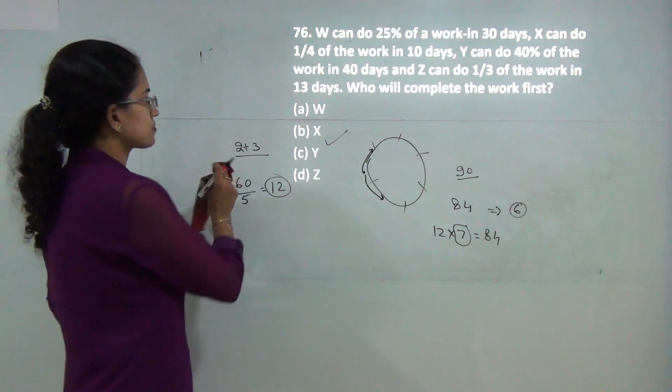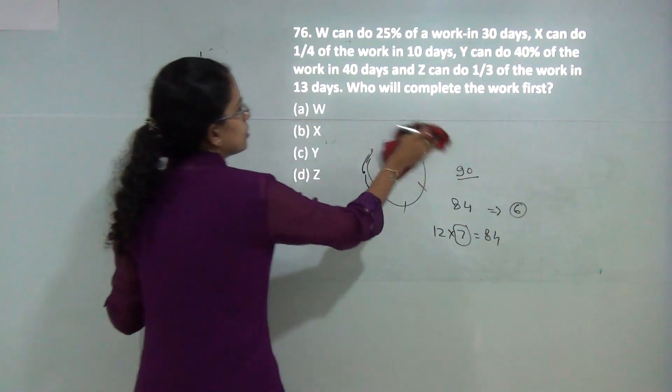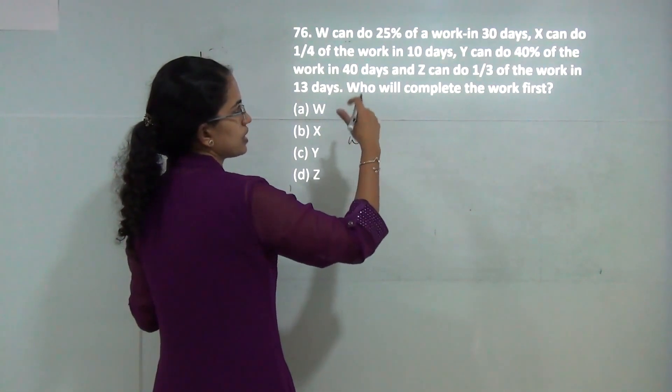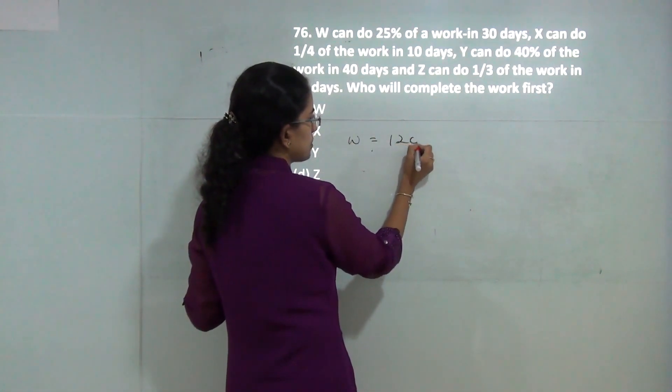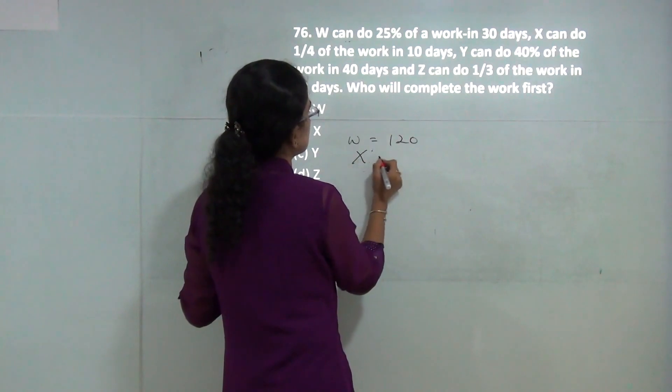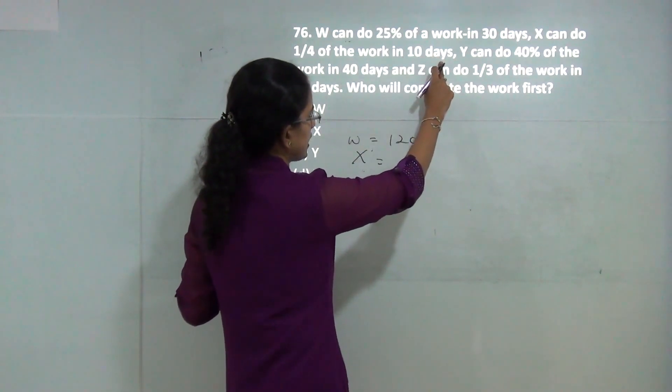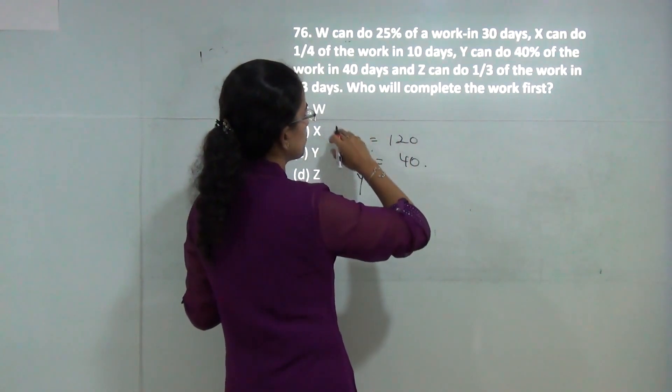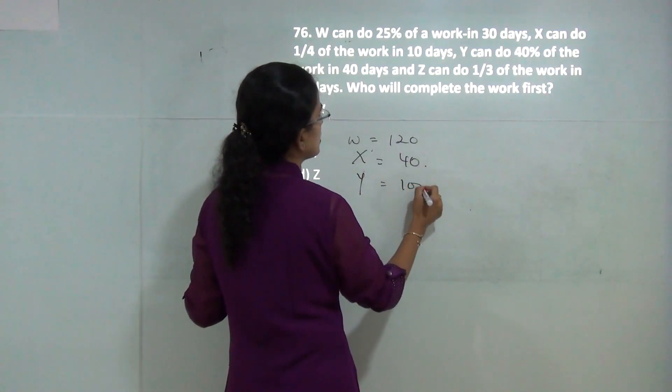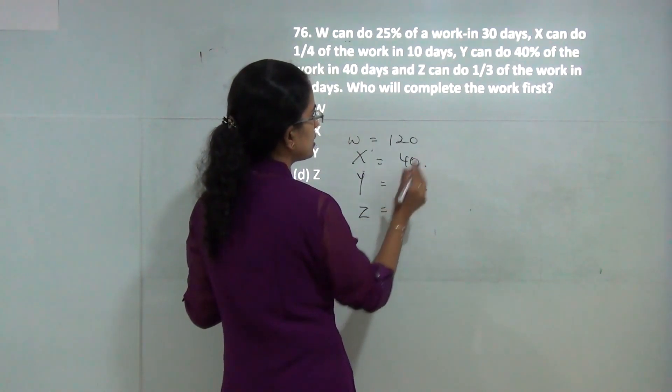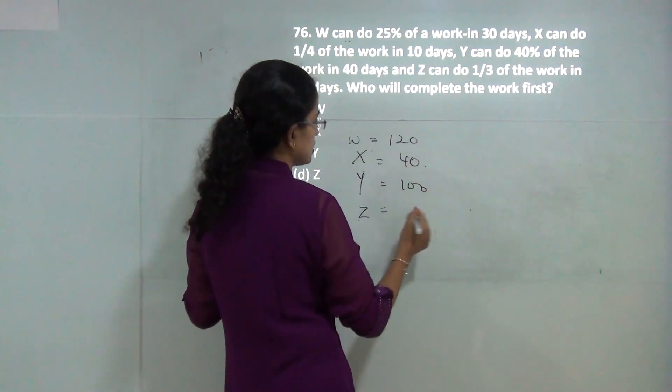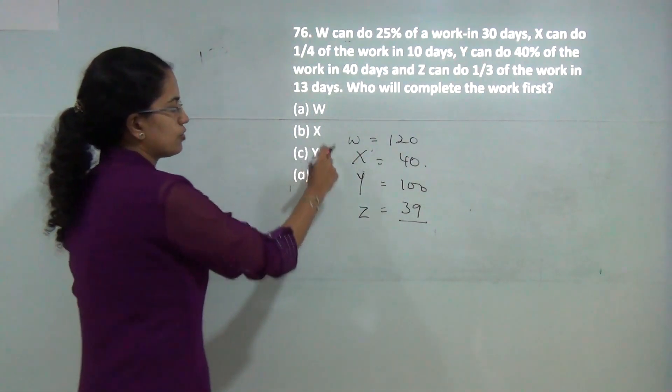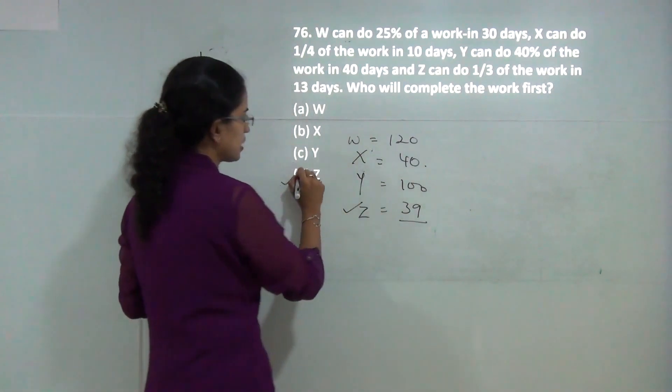Finding who completes work first: W does 25% in 30 days, so total work takes 120 days. X does one fourth in 10 days, so 40 days total. Y does 40% in 40 days, so 100 days for 100%. Z completes one third in 13 days, so 39 days total. Out of these, Z completes the work fastest.